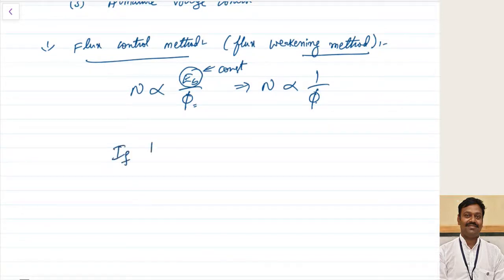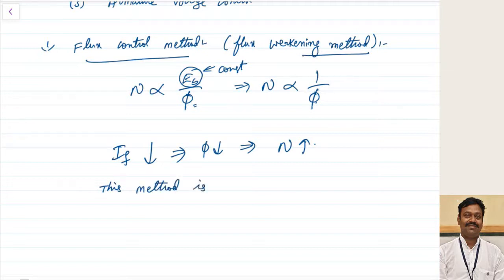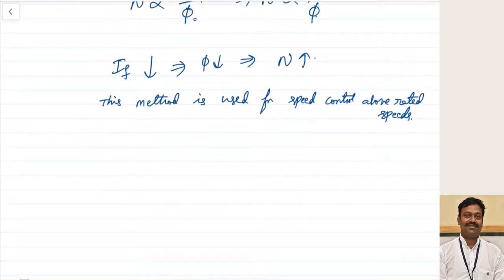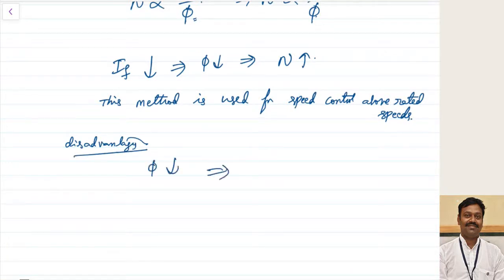If we decrease the field current, since flux depends on field current, the flux will decrease and the speed will increase. This method is used for speed control above rated speeds only. However, there is a disadvantage: as flux is decreased, the effect of armature reaction increases. Armature reaction is the effect of armature flux on the main field flux, and as a result the main field flux decreases.